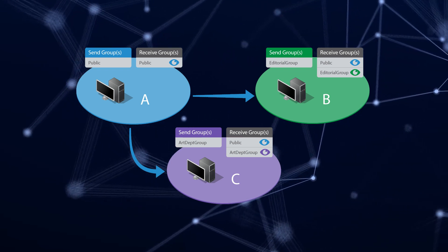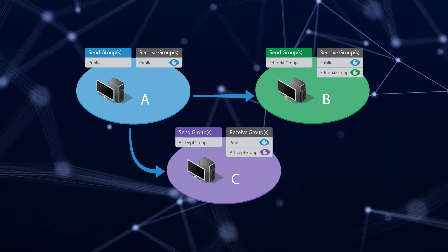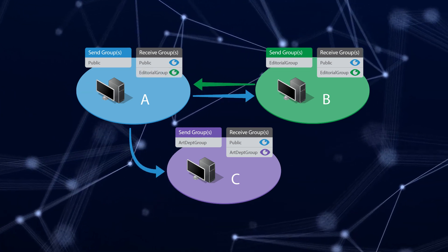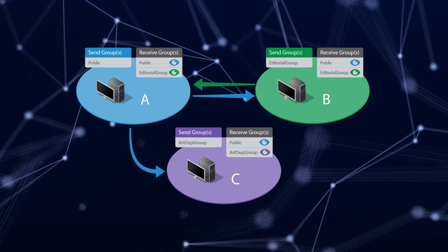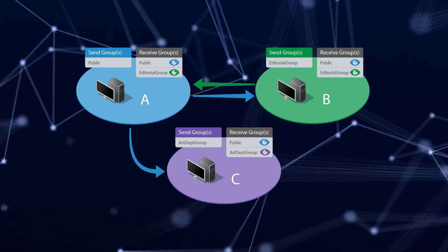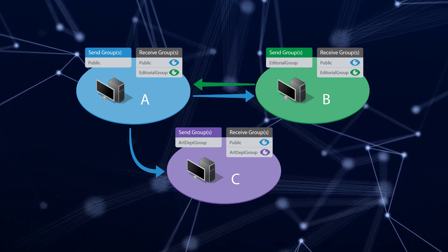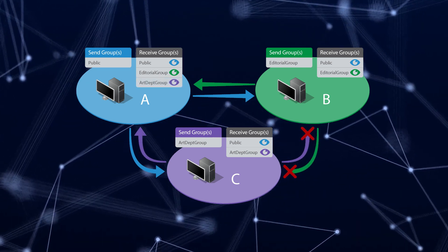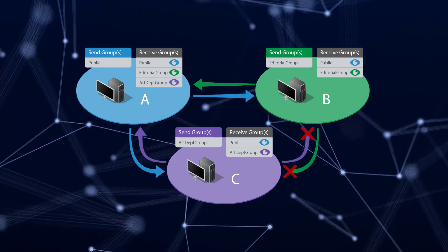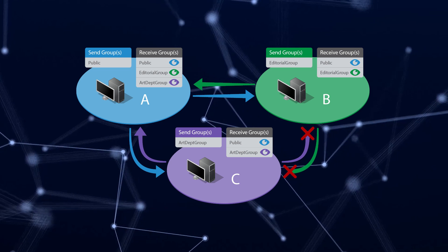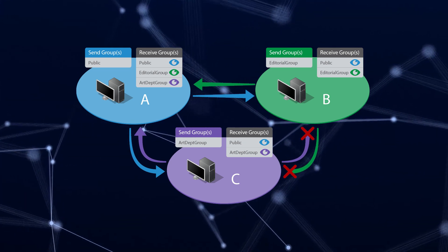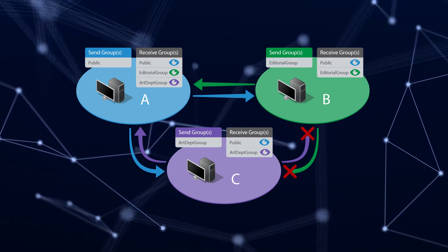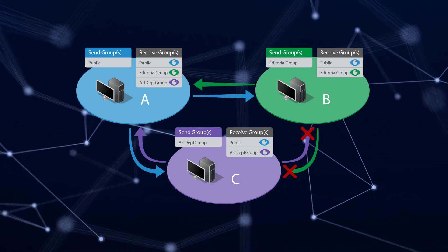This shows that Computers B and C can only receive NDI sources from Computer A. If we add to Computer A's receive group the Editorial Group, then Computers A and B can both send and receive each other's NDI sources. If we add to Computer A's receive group the Art Department Group, now Computers A and C can send and receive each other's NDI sources. However, Computers B and C cannot see each other's NDI sources.